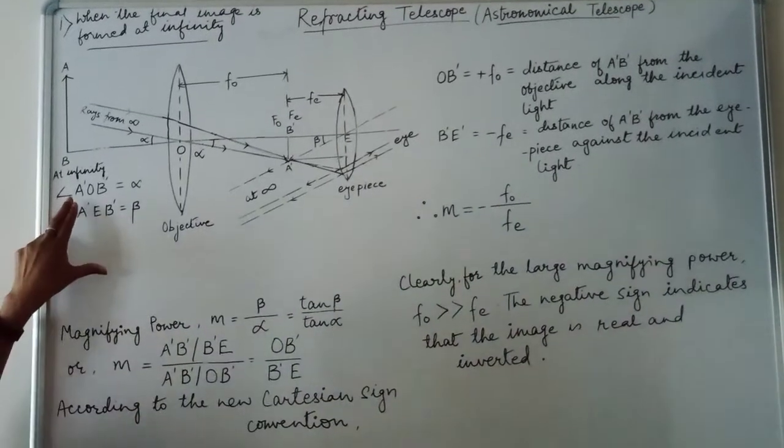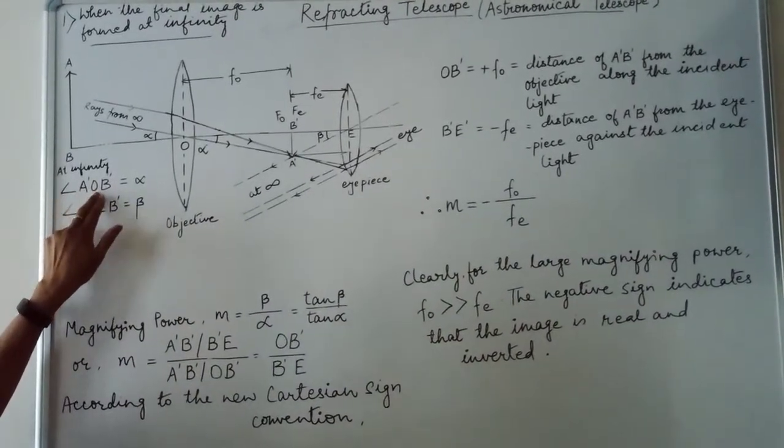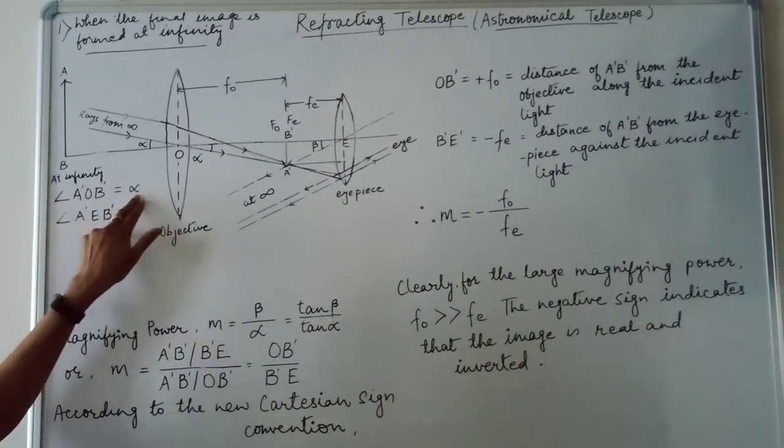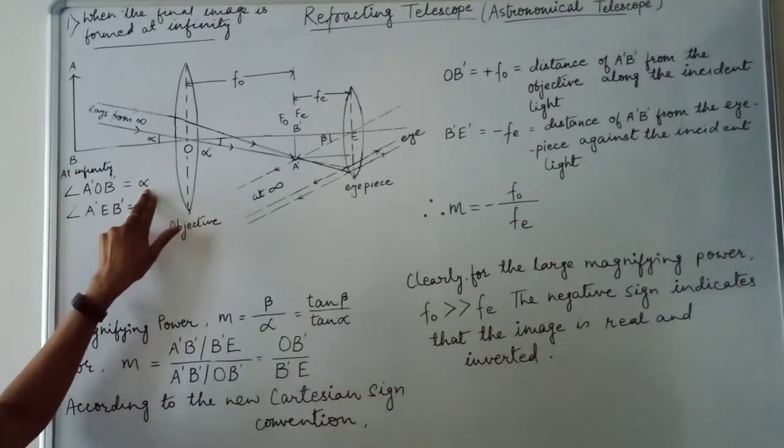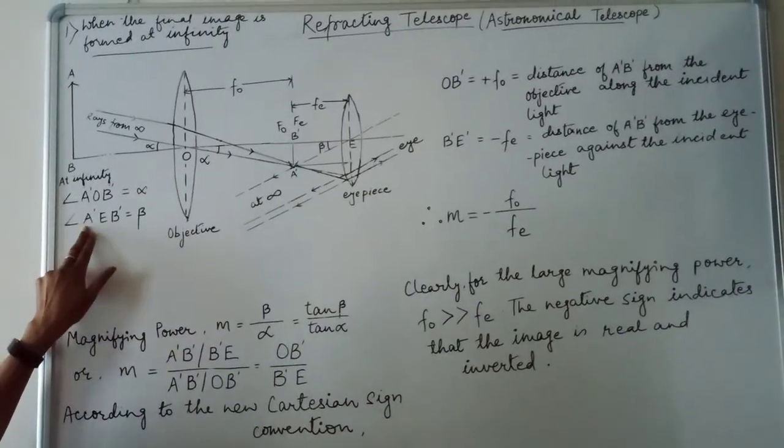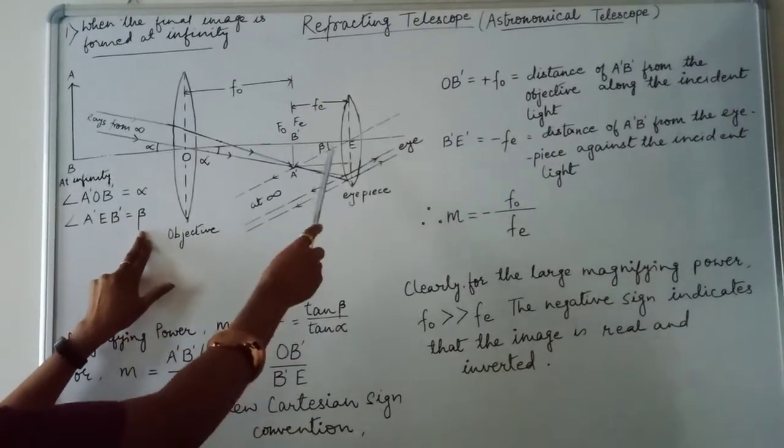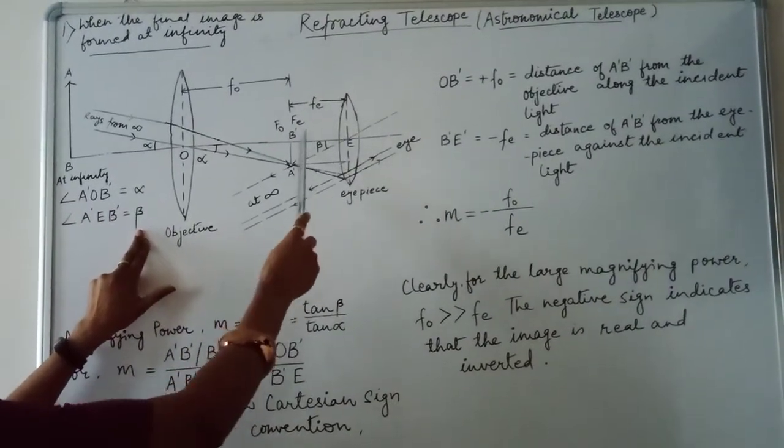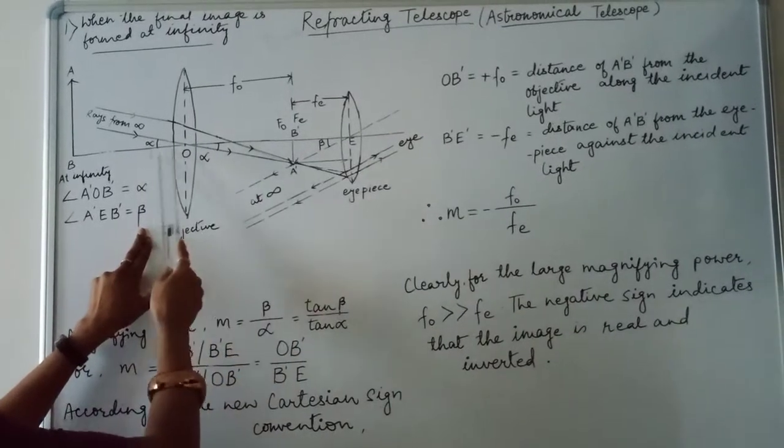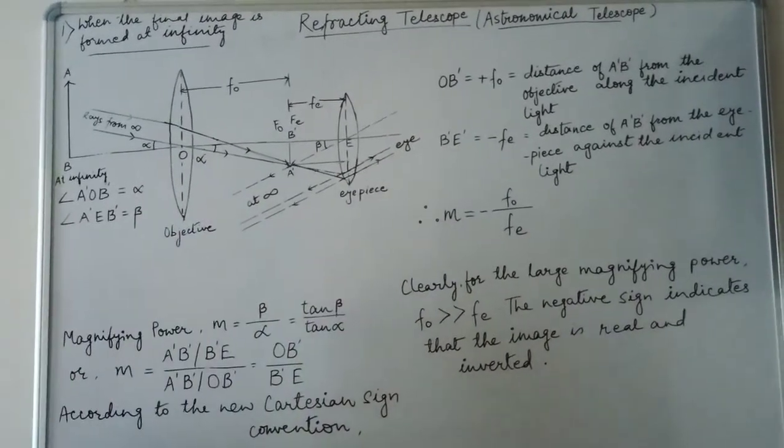angle A dash O B dash is equal to alpha. Let angle A dash E B dash is equal to beta. Here, angle beta and angle alpha. Now,